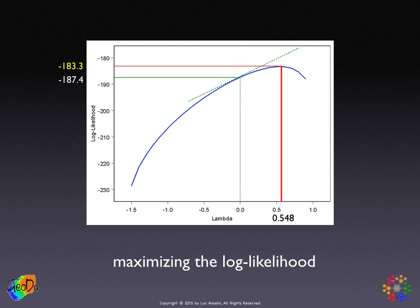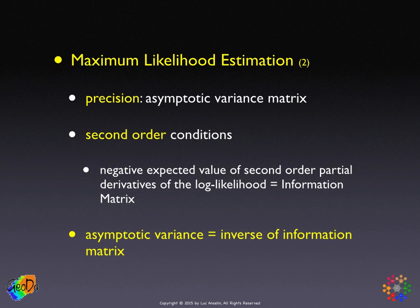The first-order conditions give us the solution, but they don't tell us about the precision of the estimate. To get that, we need an asymptotic variance matrix from the central limit theorem, obtained by applying the so-called second-order conditions. The second-order conditions give us what is called the information matrix.